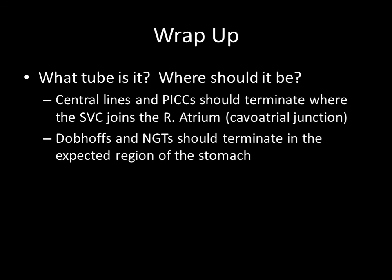For lines on ICU chest films, you want to verify what type of line it is, where it should be headed, and what it's supposed to be doing. You also want to rule out iatrogenic complications: subcutaneous emphysema, pneumothorax, or any signs of hemorrhage such as an expanding hematoma when placing a central line. And make sure Dobhoffs and NG tubes aren't terminating in the lung fields — it can be disastrous to start a feed when the tube is in the airway.